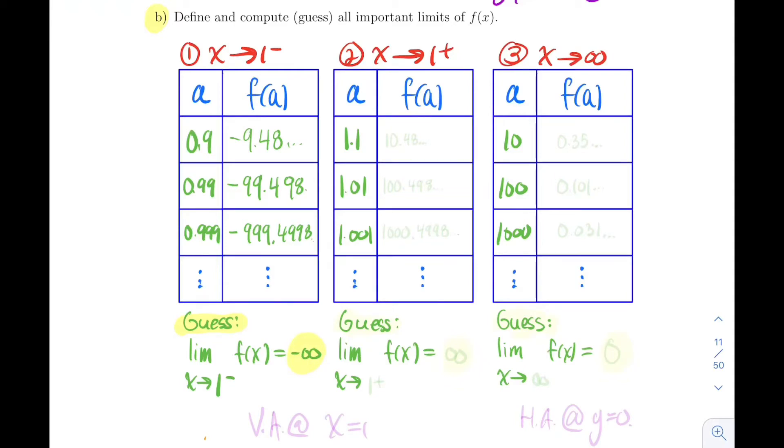These numbers are just getting bigger and bigger negatively speaking. This already tells us that there's a vertical asymptote here at x equal 1.